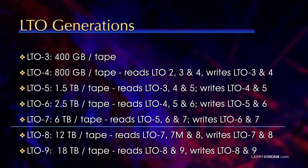LTO is measured in generations. There's LTO 1 and 2 which are fairly old, and then LTO 3 through the latest version, which is generation 9. The big differences between generations are the amount of information that can be stored on the tape and the speed at which the drive writes. LTO 3, for instance, stores 400 gigabytes per tape. That doubled with LTO 4, doubled again with LTO 5, roughly doubled again with LTO 6, doubled again with LTO 7. And then doubled again so that LTO 9, which was released in September of this year, holds 18 terabytes per tape.